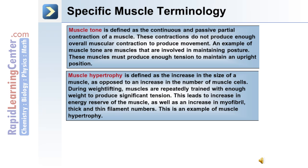Muscle hypertrophy is defined as an increase in the size of a muscle, as opposed to an increase in the number of muscle cells. During weightlifting, muscles are repeatedly trained with enough weight to produce significant tension. This leads to an increase in the energy reserve of the muscle, as well as an increase in myofibril, thick, and thin filament numbers. This is an example of muscle hypertrophy.